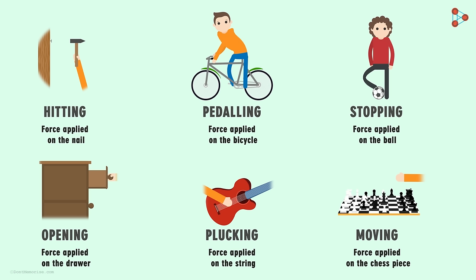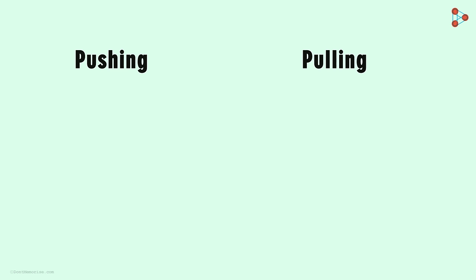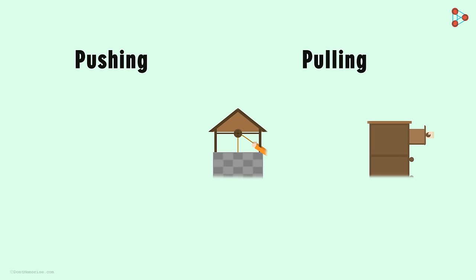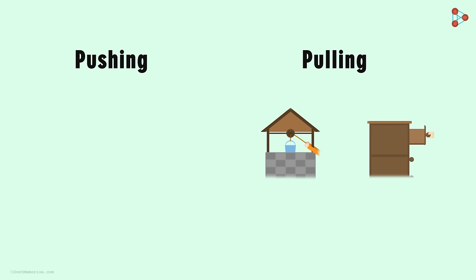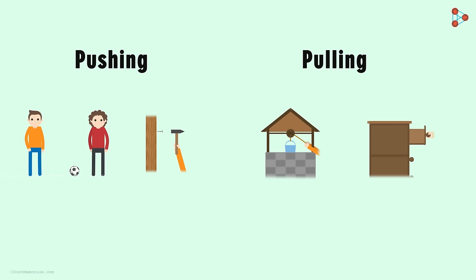These are just a handful of the many actions we can perform on objects, and it is not possible to write each one of them. But we can categorize all these actions into two basic ones — pushing and pulling. For example, when we open a drawer, we are simply pulling the knob to open it. Similarly, when drawing a bucket of water from a well, we are pulling the bucket towards us. Actions such as passing the ball or hitting a hammer on a nail can be thought of as pushing an object.